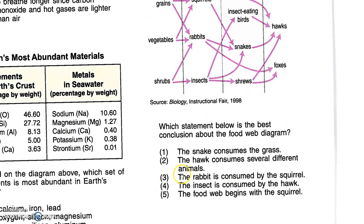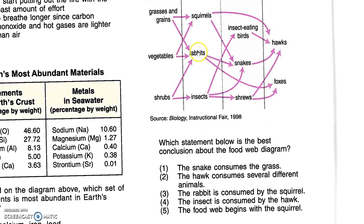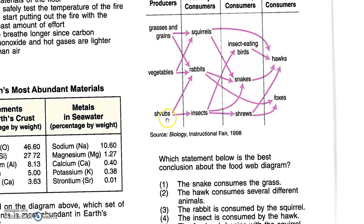Let's have a look at the others. The rabbit is consumed by the squirrel. This would mean there should be an arrow from here to here. There is not, so this is wrong. The insect is consumed by the hog. No arrow to the hog. The food web begins with the squirrels. Well, the food web begins with the producers, with the plants. So the right answer is number two. The hog consumes several different animals.